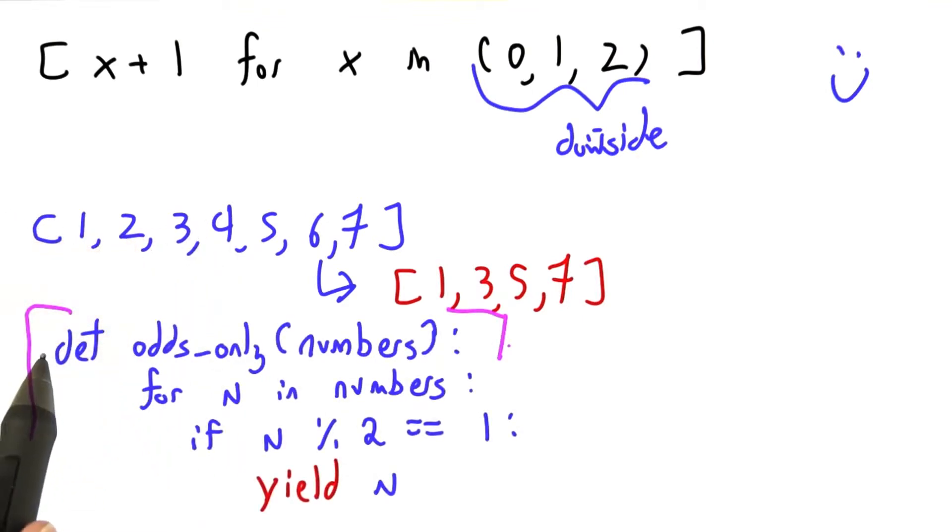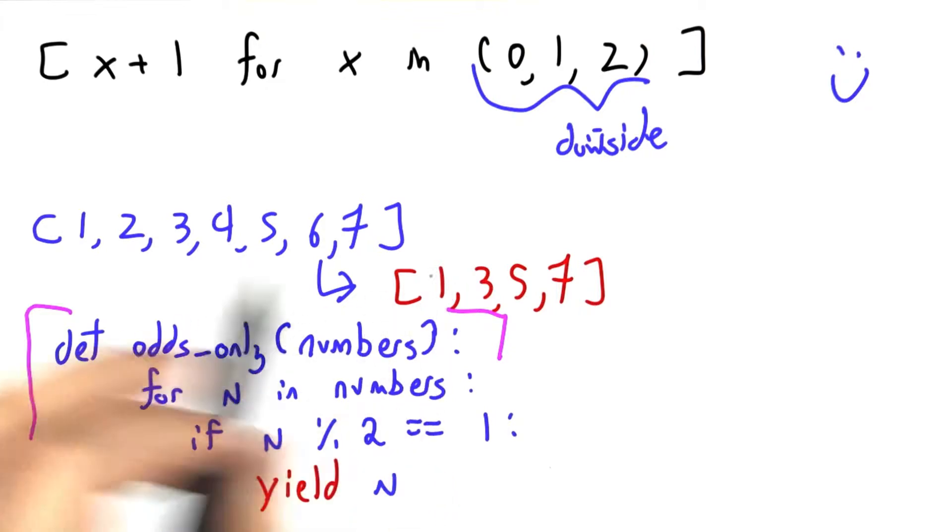Here I've written a procedure called odds_only in Python that takes a list of numbers and it's going to iterate over them. For every n in that list of numbers, if that number is odd, we divide it by 2 and check the remainder. 5 divided by 2 is 4 with remainder 1, so it's odd. We yield that part into our result. Note that I did not write the word return. Yield is a new special keyword that means we can use this sort of procedure to gather up multiple results.